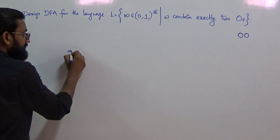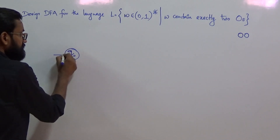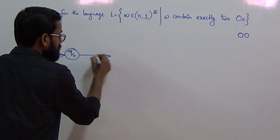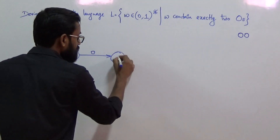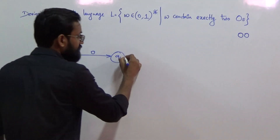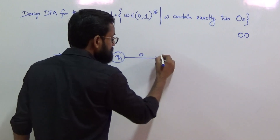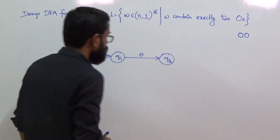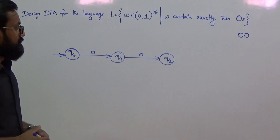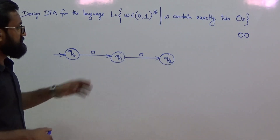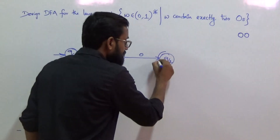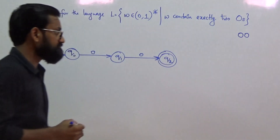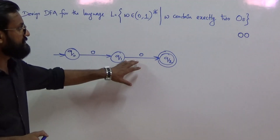Consider a transition diagram that accepts the minimum string '00'. From state q0, on the first 0 it goes to state q1, and from q1 on the next 0 it goes to state q2. So q2 is treated as the final state, and this accepts the minimum string '00'.